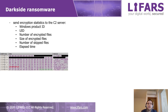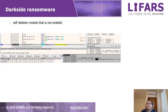The malware will send encryption statistics to the C2 server, including the Windows product ID, UID, number of encrypted files, size of encrypted files, number of skipped files, and elapsed time. The ransomware also has a self-deletion module that is not enabled, which is responsible for deleting the initial executable file and then exiting.